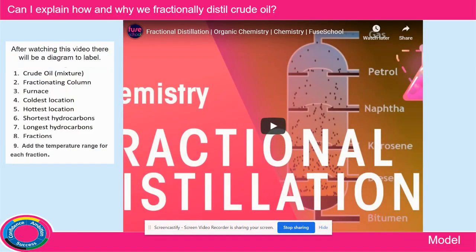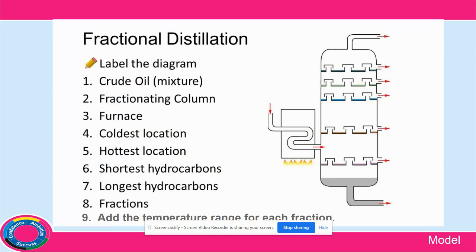After watching the video, there'll be a diagram of a fractionation column to label. All the information in this video will be useful for you to answer questions both in this presentation, the assessment which follows, and next year when you're doing your GCSEs. Label the diagram — all the arrows need labels. Add them on and see how you got on on the next page, which has the picture with labels.